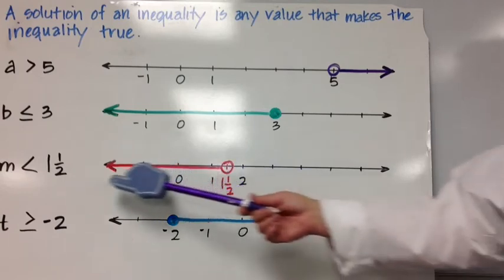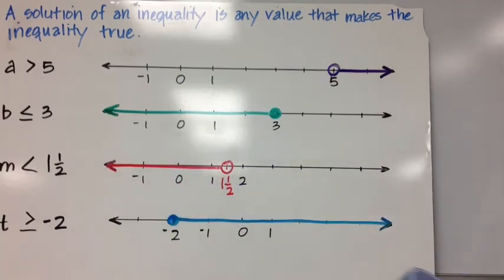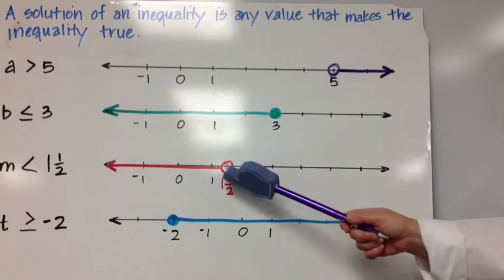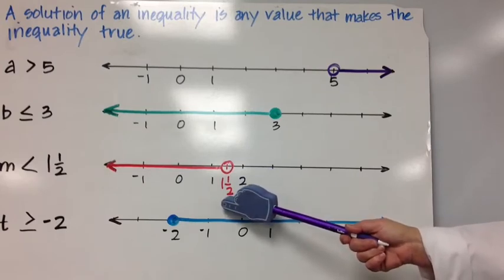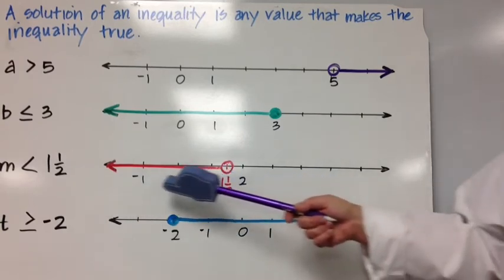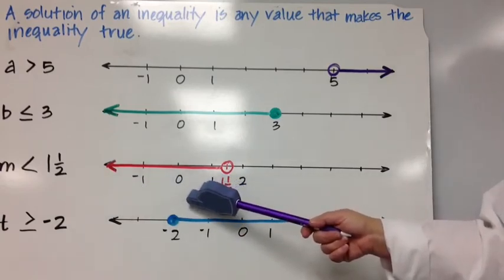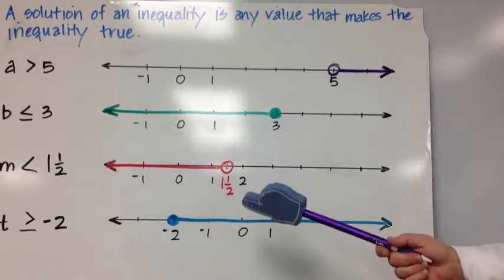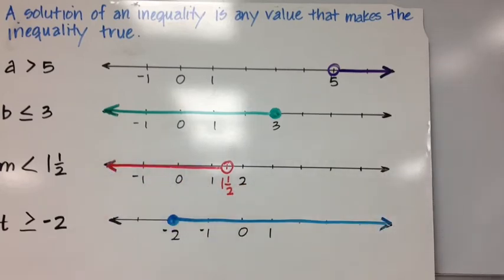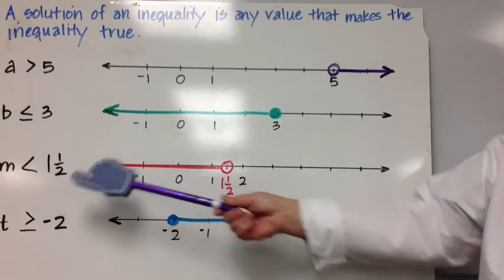M is less than 1.5. Since 1.5 is not part of the solution set, our endpoint is an open circle at 1.5, and we go to the left — the negative direction — because every value less than 1.5 is a solution. Pick a number: negative 1.4 is less than 1.5; 1.4 is less than 1.5. There are an infinite number of solutions that satisfy that inequality.